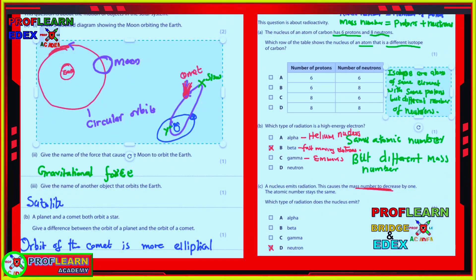What mattered most in the May/June paper is your understanding that the moon orbits around the Earth. You are expected to draw the orbit of the moon around the Earth — the orbit of the moon is circular, while the orbit of a planet is elliptical. The orbit of a comet is more elliptical than the orbit of a planet. Both comets and planets orbit the sun or a star.